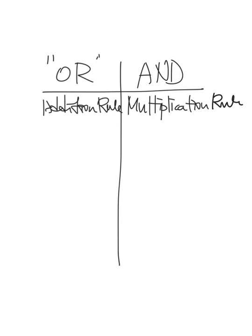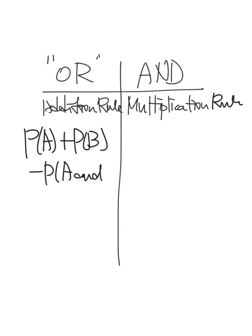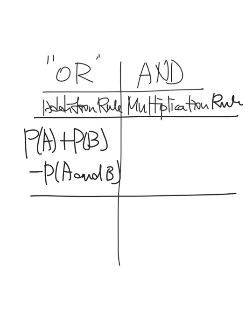Let me write the general one first. The addition rule was yesterday. Generally, it was probability of A plus probability of B — it's not only addition; generally we added in the middle twice — but minus probability of A and B. That was the general addition rule.